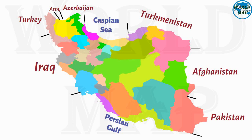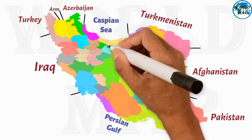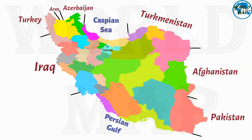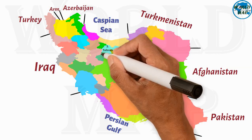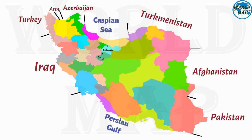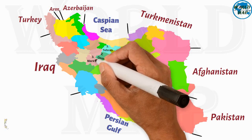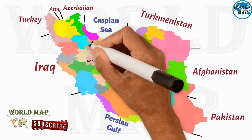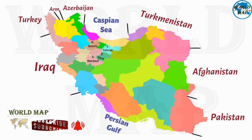Now we discuss the provinces of Iran one by one according to their location. Number 1: Tehran. Number 2: Qom. Number 3: Markazi. Number 4: Qazvin.